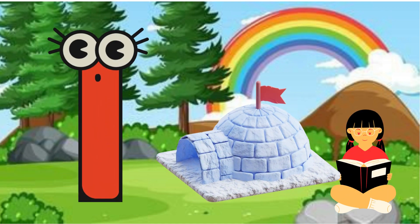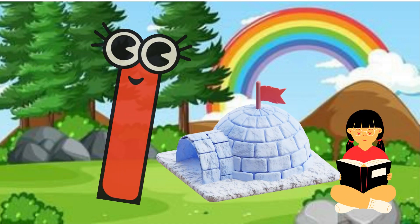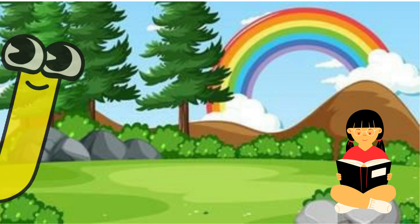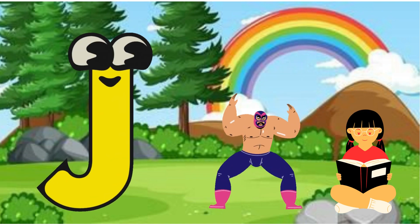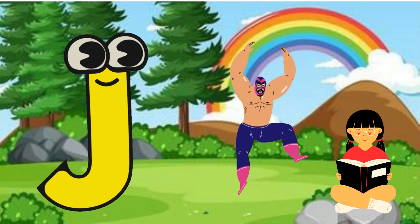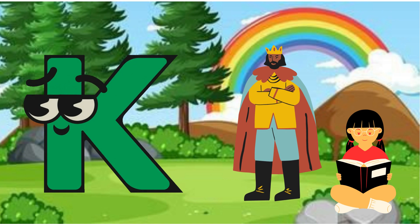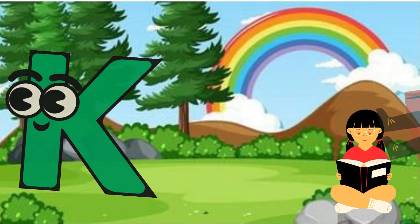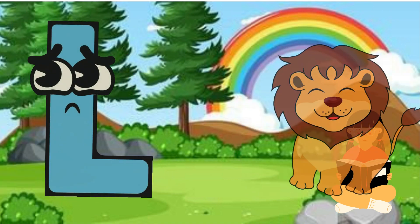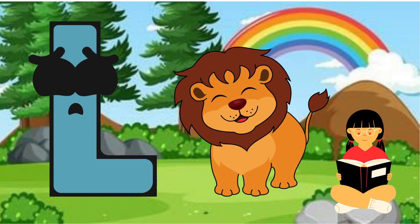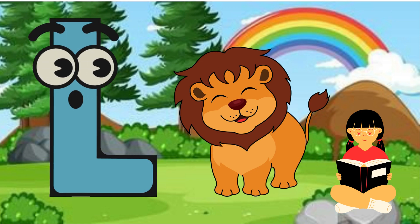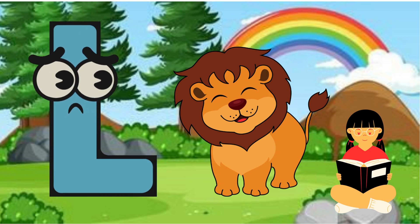I is for Igloo, I-I-Igloo. J is for Jump, J-J-Jump. K is for Kangaroo, K-K-Kangaroo. L is for Lion, L-L-Lion.